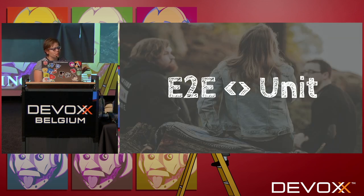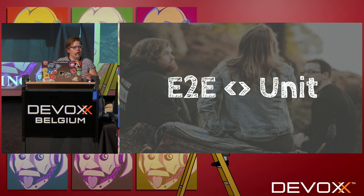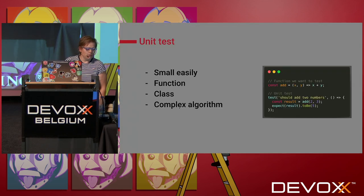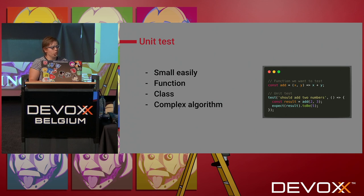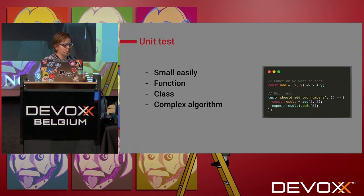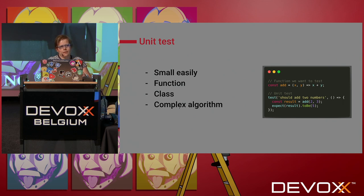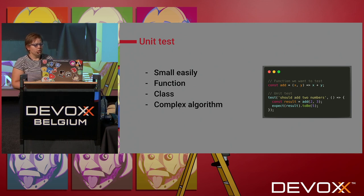I'll start with a small explanation of the difference between end-to-end testing and unit testing, because this is a topic where a lot of people struggle. Unit tests should be small, easy to read, and functional. Most of the time they represent a function — you break down your application into smaller parts. It can be a class or a complex algorithm. You test some input and expect some output. If you start refactoring your code, it should not affect your tests.